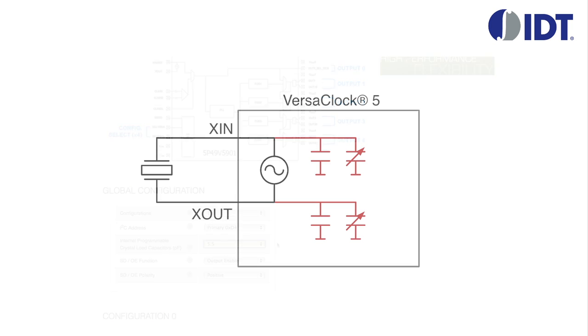Sometimes, the CL of the crystal exceeds the tuning capabilities of the VersaClock 5 internal capacitors. This is the case when CL is greater than 12.5 pF. In this case, external capacitors need to be added to the board as shown.